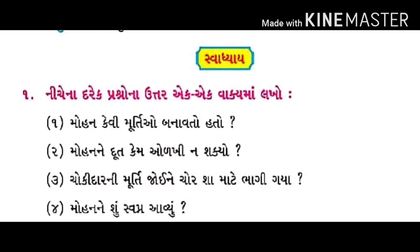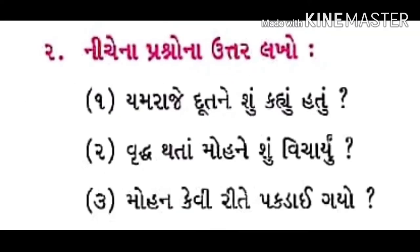આ પ્રશ્નના ઉત્તર માત્ર એક વાક્યમાં જ લખવાના છે. નંબર એક: મોહન કેવી મૂર્તીઓ બનાવતો હતો? — મોહન અદ્ભુત અને આબેહૂબ મૂર્તીઓ બનાવતો હતો. નંબર ત્રણ: ચોકીદારની મૂર્તી જોઈને ચોર સામેથી ભાગી ગયા. નંબર ચાર: મોહને સ્હૂસ્કો નાખ્યો.